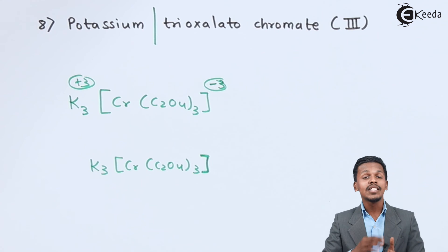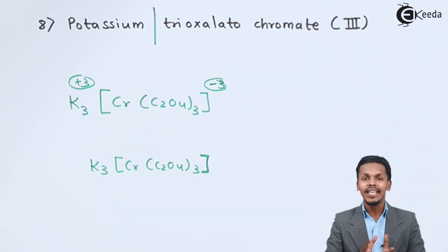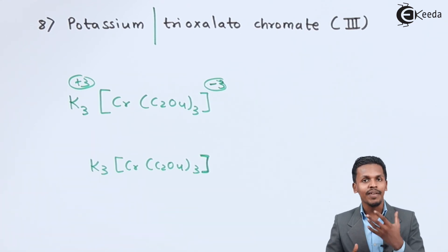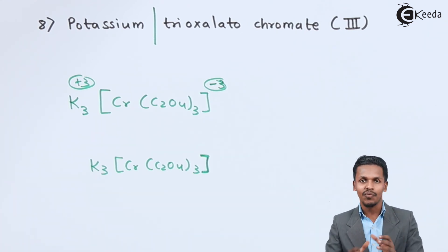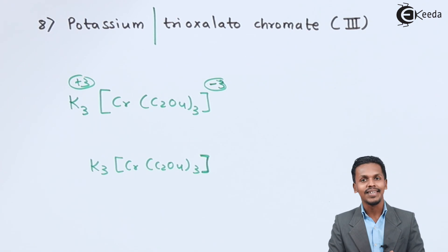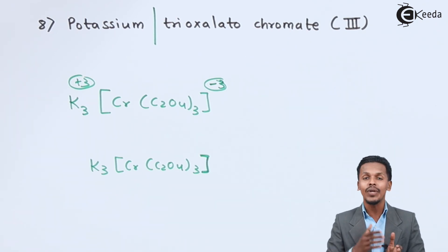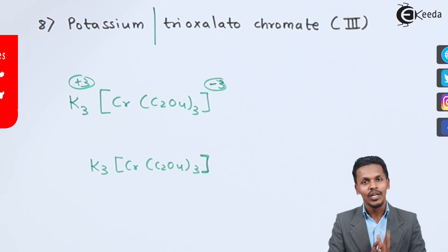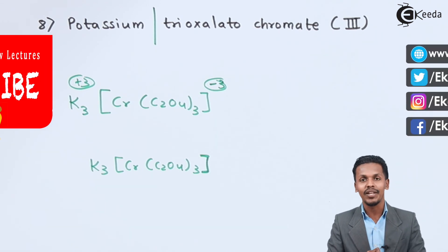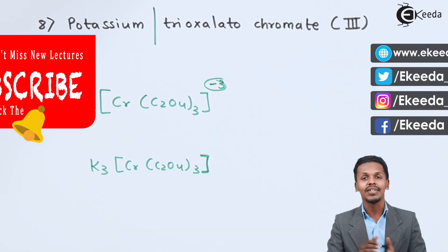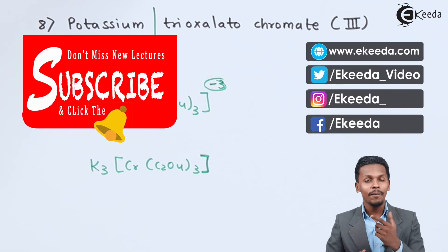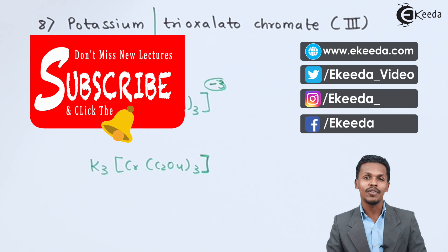So this is how we can give the chemical formula to the IUPAC nomenclature for a coordination compound. Thank you friends for watching this video. I hope you have understood how to write the chemical formula for the IUPAC nomenclature.